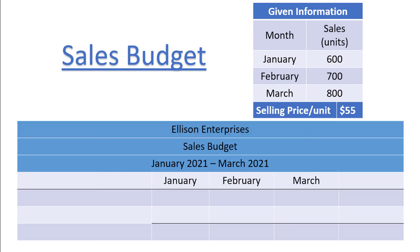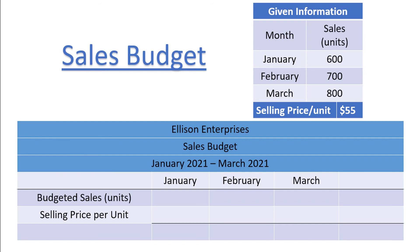The sales budget is one of the simplest budgets to complete. All we need to do is list the budgeted sales in units, multiply the budgeted sales by the selling price per unit, and then we will have the total budgeted sales in dollars for each month. The budgeted sales in units for the first three months of 2021 are 600, 700, and 800, so we can copy those values into our budget.